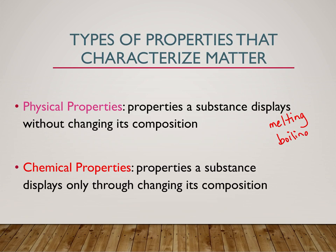People often think melting and boiling point are chemical properties because you're doing something to your substance and changing it. Well, you're not changing its composition. If you think about ice — ice is frozen H₂O, and if you melt it, now it becomes liquid H₂O, but it's still H₂O. We haven't changed the compound, we haven't changed its composition. We've changed its state of matter, but not its composition. So physical properties are things you can talk about without changing the composition, though you can change the phase of matter.